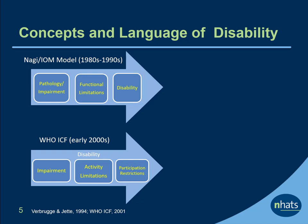Disability is often defined as difficulty or inability to carry out daily activities necessary to live independently. Although not shown, the IOM framework also recognizes that aspects of the environment determine whether functional limitations result in disability. Two common measures of late-life disability developed in the 1960s and 1970s are the Katz activities of daily living, or ADLs, and Lawton's instrumental activities of daily living, or IADLs.